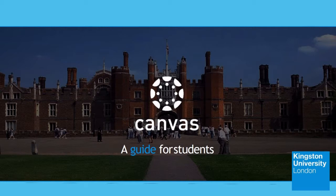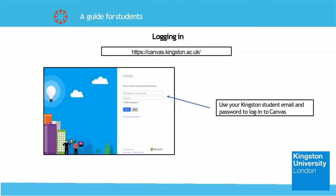Let's begin with how to log into Canvas. First, you can use this link to visit the Canvas website for Kingston, or you can simply Google Kingston Canvas and click on the result. Once you're at the login page, use your Kingston email and password given to you and click sign in when you are done.